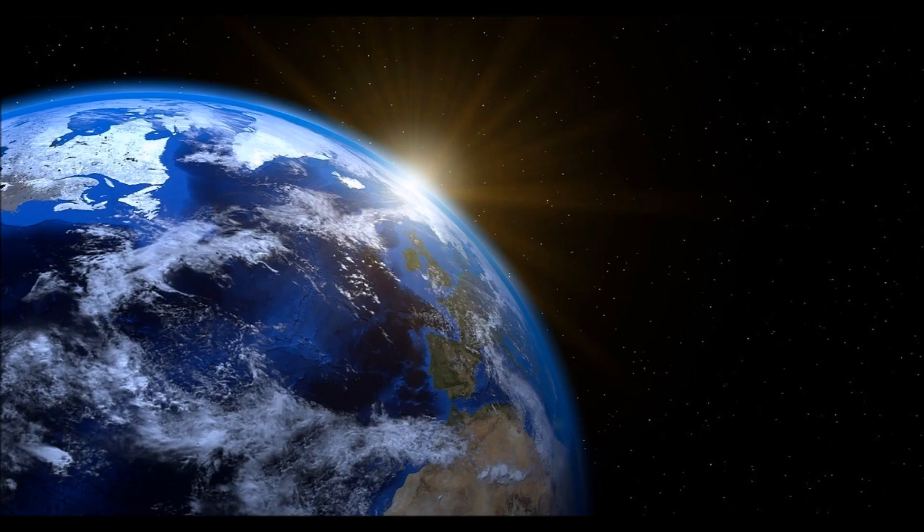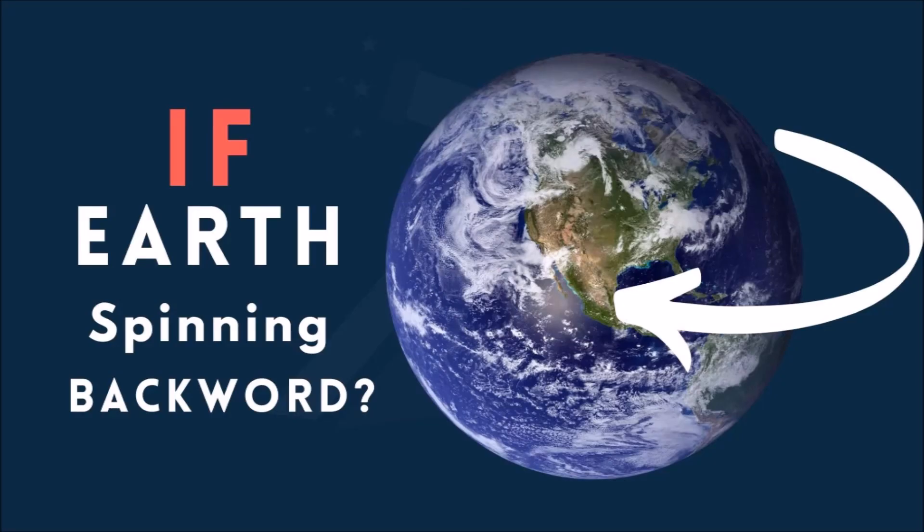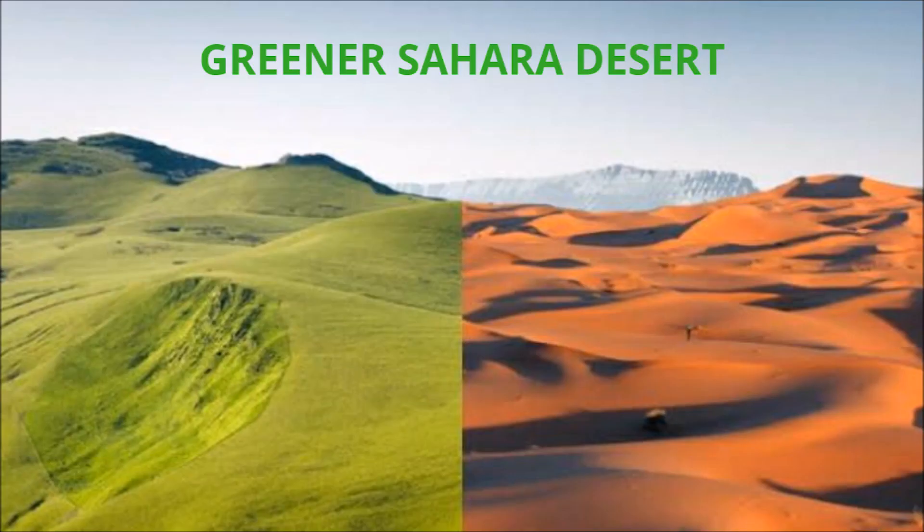You don't notice it, but our planet spins pretty fast. It's about 460 meters per second as measured at the equator. A sudden change of direction would cause disastrous winds and massive waves. Together, these abnormal weather conditions would wipe out nearly everything above the ground.